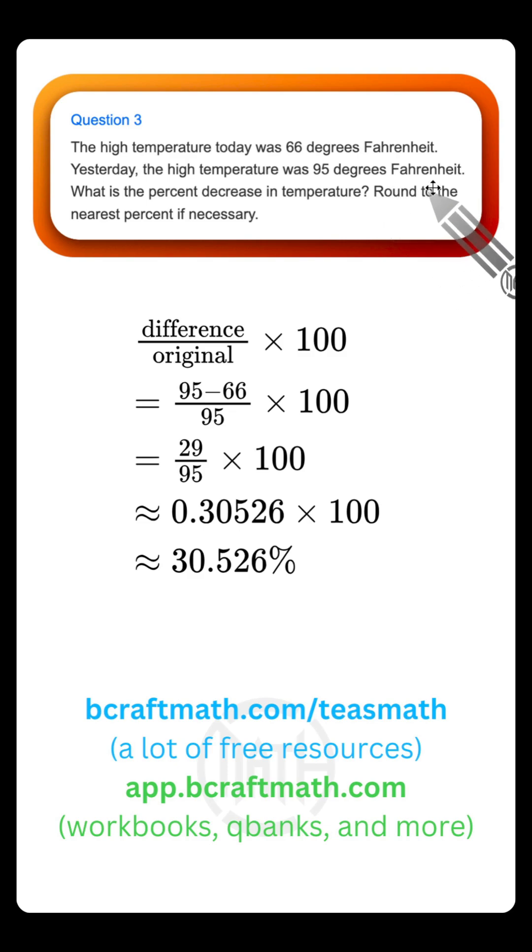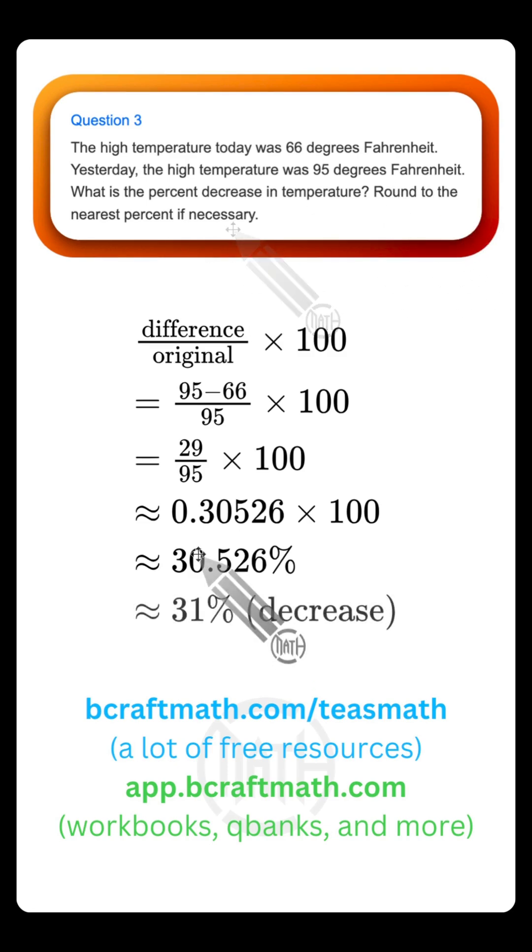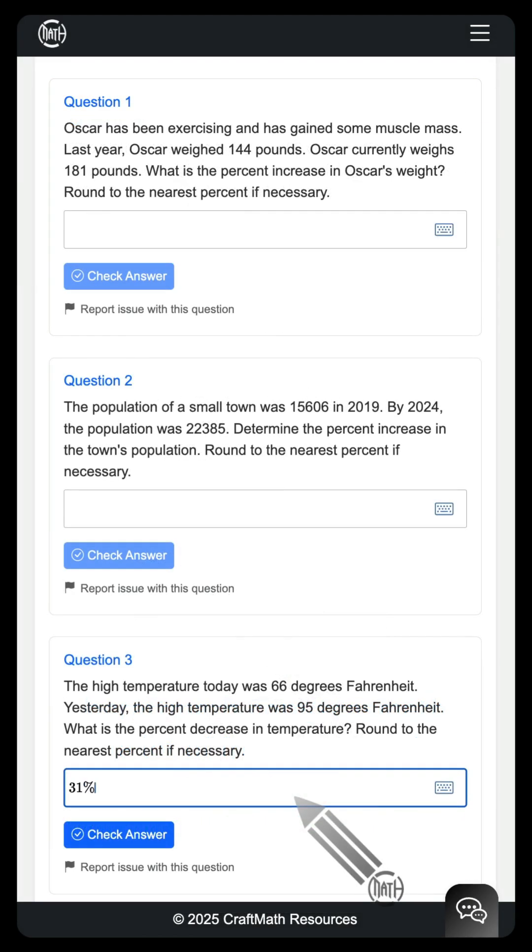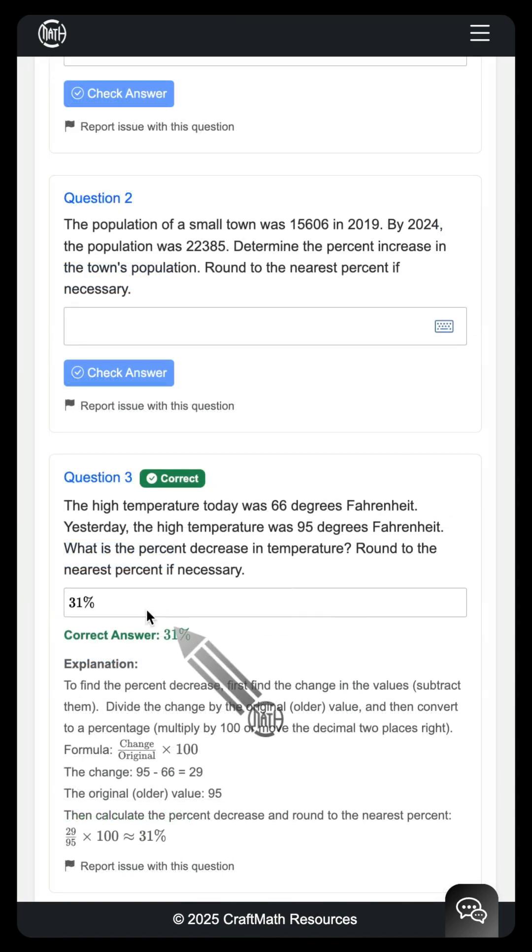But taking note of the instructions, round to the nearest percent if necessary. So this zero will bump up to a one because the five to the right tells it to go up. So our percent decrease is around 31 percent. And for this answer, 31 percent, let's make sure we include that percent symbol. Checking our answer, we can see that it's correct.